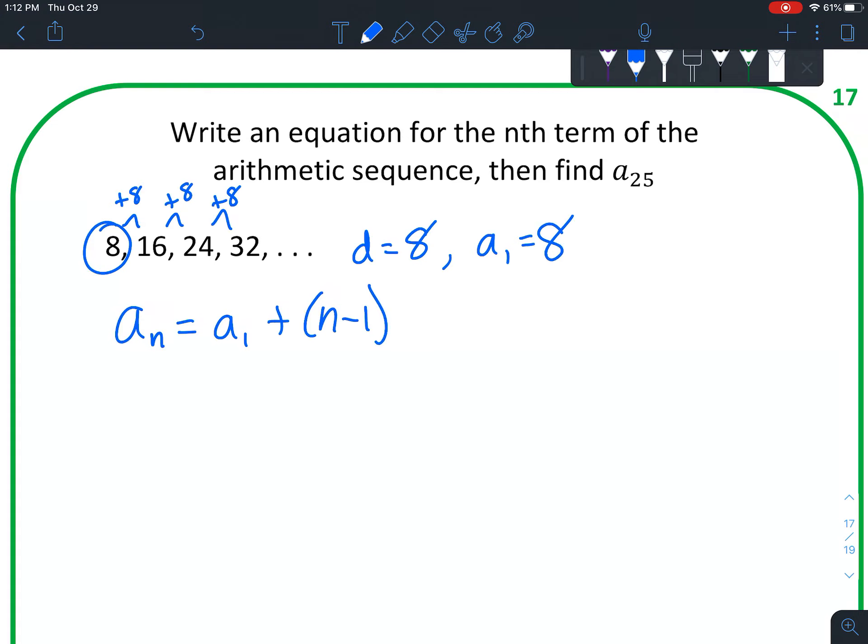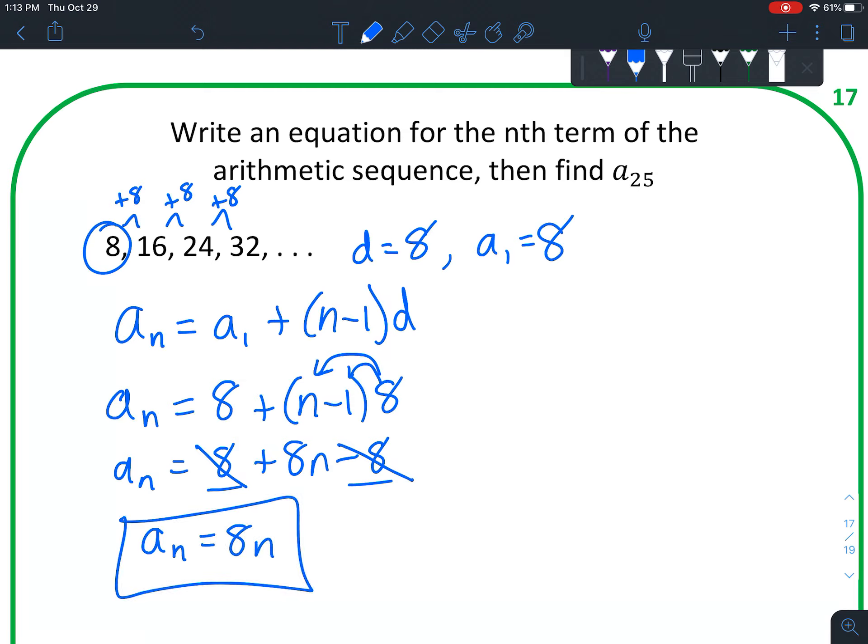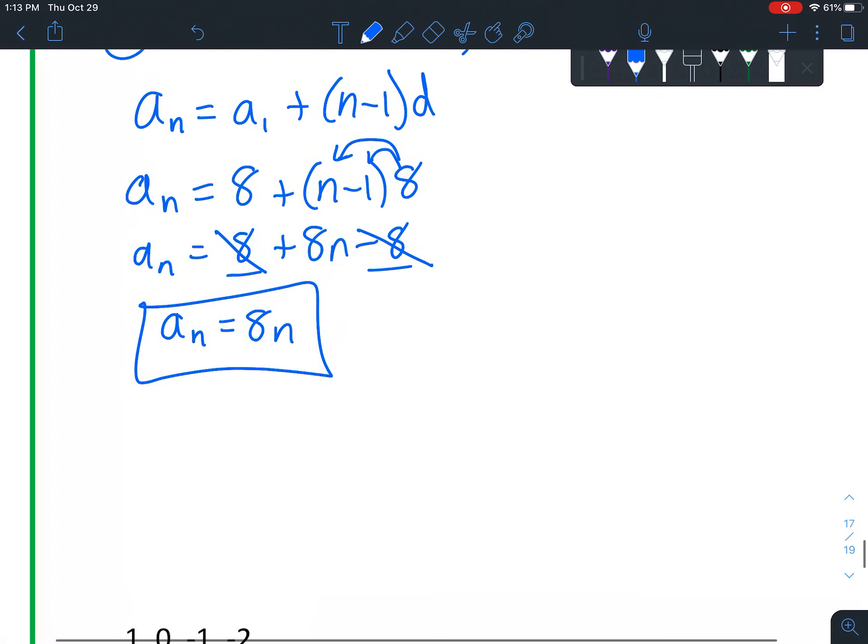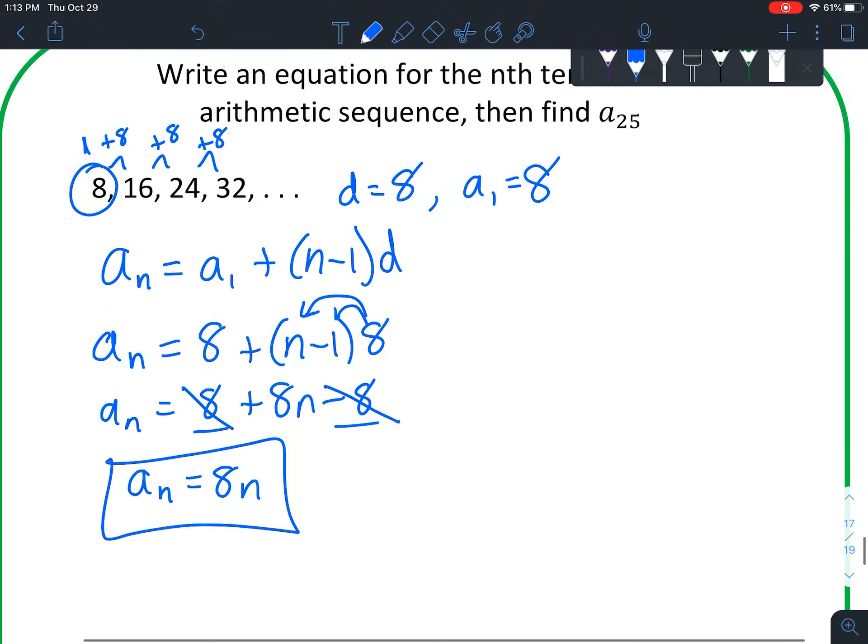And let's plug it into our formula. A sub n equals a sub 1 plus n minus 1 times d. Keep the n's generic. Multiply to get rid of your parentheses. 8 times n is 8n. 8 times negative 1 is negative 8. This one's a little funny because you'll notice 8 minus 8. Those essentially cancel each other out. We get 0 there. So a sub n equals 8n. And looking back, you can see that that is actually the case. So the first term, 8 times 1 is 8. Second term, 8 times 2 is 16. Most of them don't simplify quite that much.